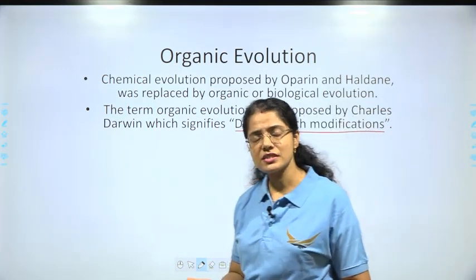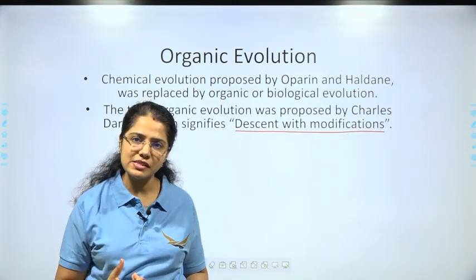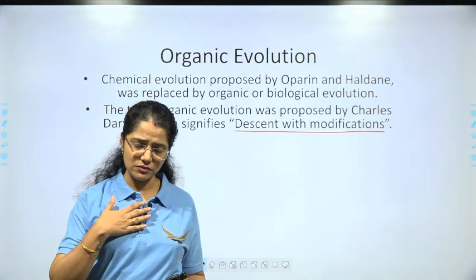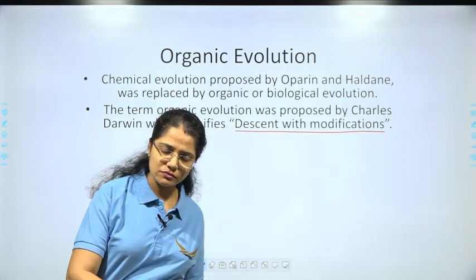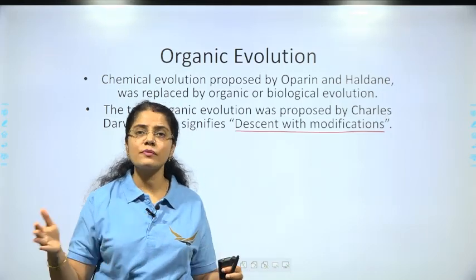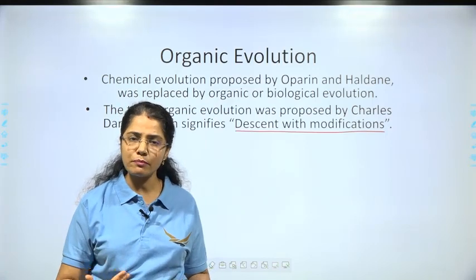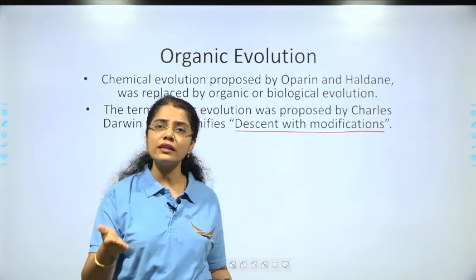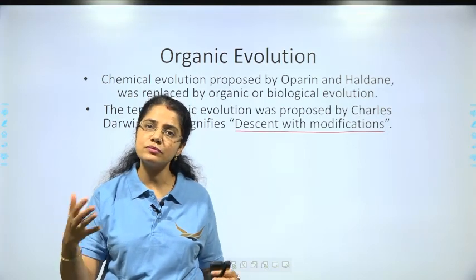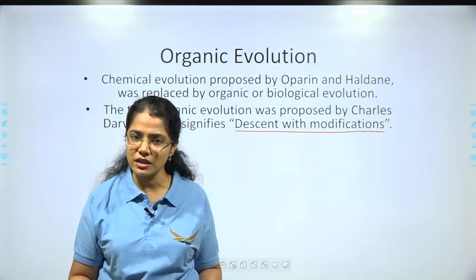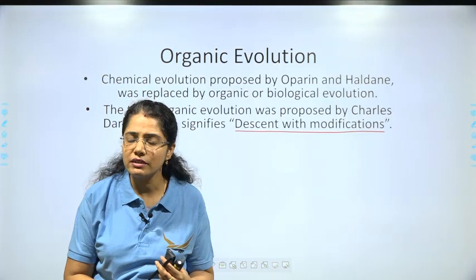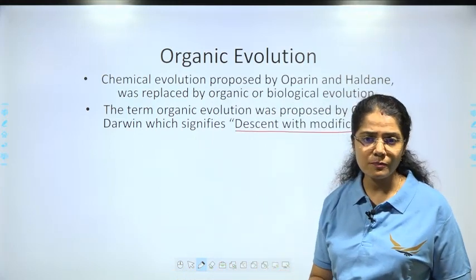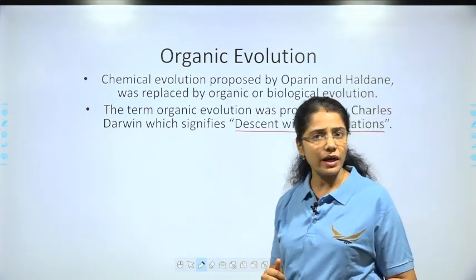As we go further in this chapter, we'll come to a point called the geological time scale. In the geological time scale, we study how the evolution of life has been divided into different eras for better understanding. At each time period, the surroundings, atmosphere, and habitats of the earth were different, and life forms that could survive in those environments emerged. Hence, the geological history of the earth is closely related to its biological history.